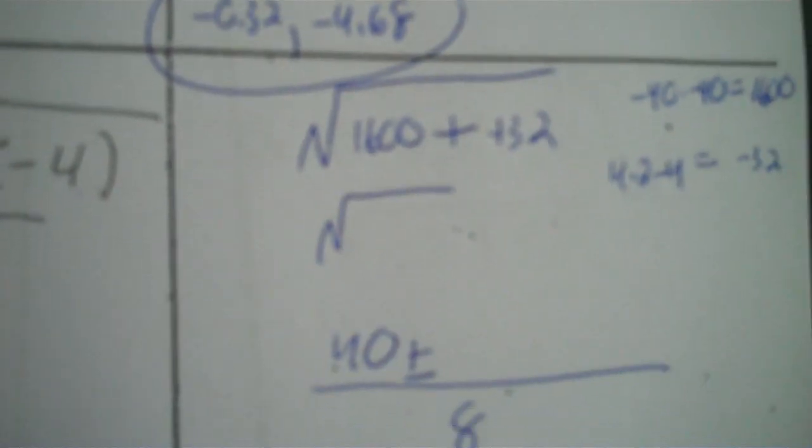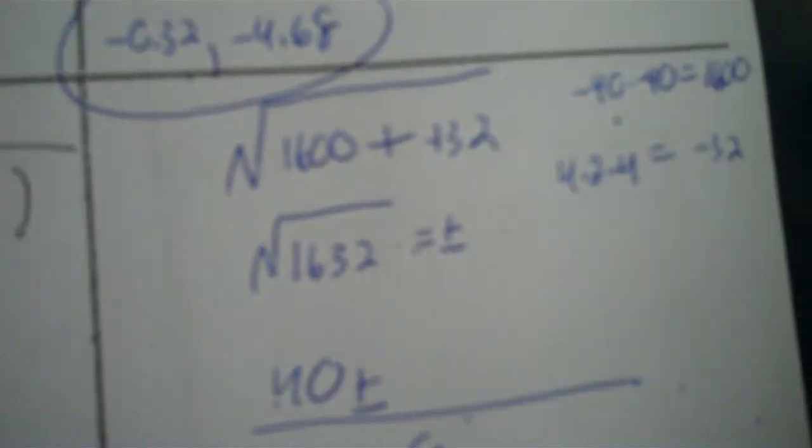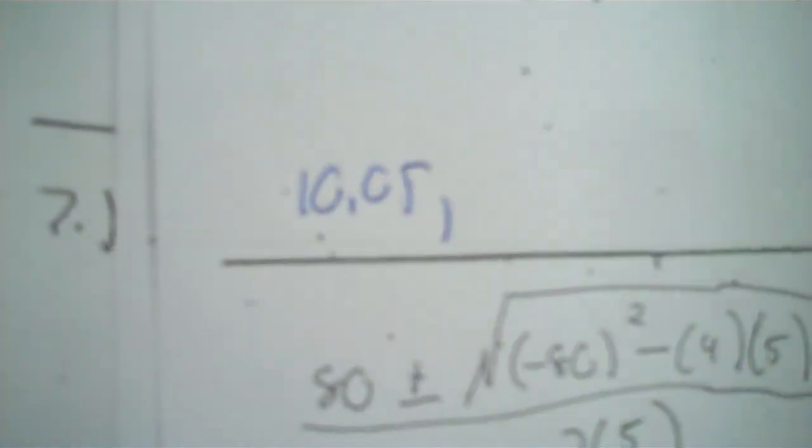Negative 40 times negative 40 is positive 1,600. And 4 times 2 times negative 4 is negative 32. So in front of the minus you've got 1,600, and after it you have negative 32. When you're minusing a negative number, you make it addition of the positive. So it'll be 1,600 plus 32, because the minus-negative goes to plus-plus. So that's 1,632. Find the square root of 1,632 — I got 40.40. We take 40 plus 40.40, click equals, divide by 8 — that's 10.05. Then 40 minus 40.40, click equals, divide by 8 — negative 0.05.